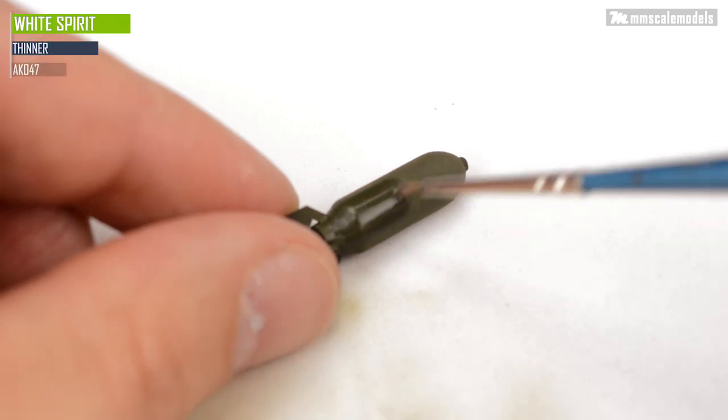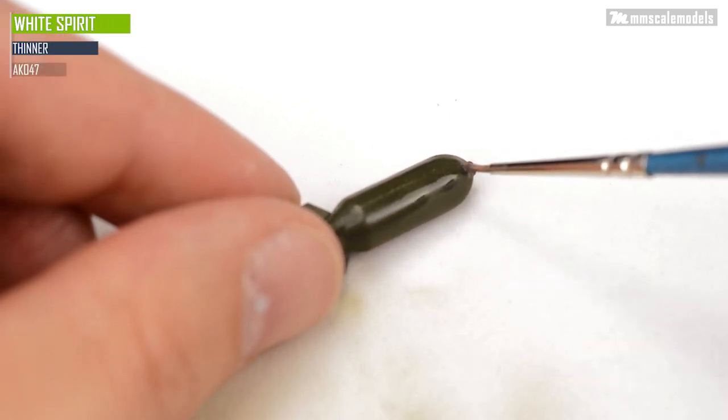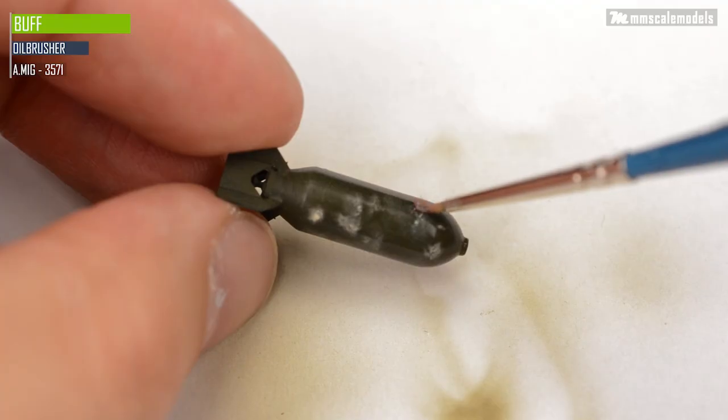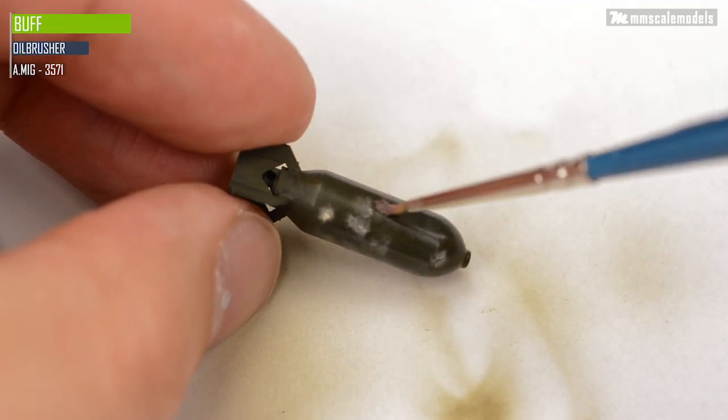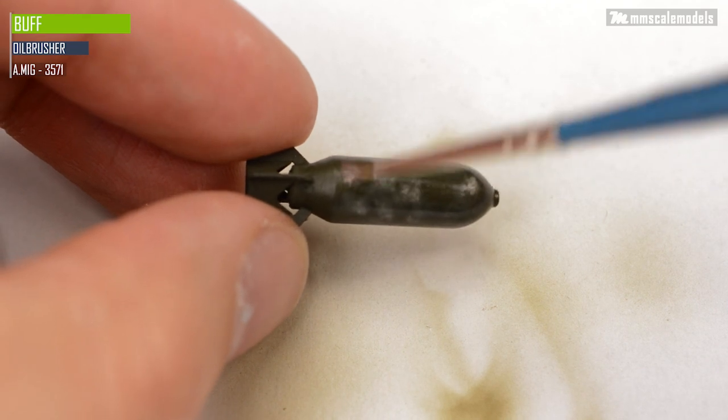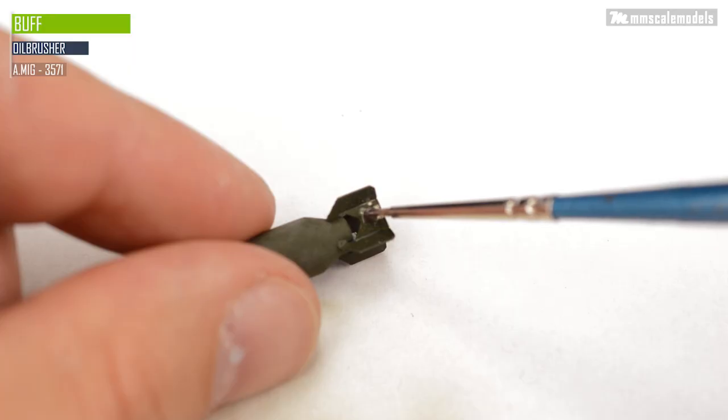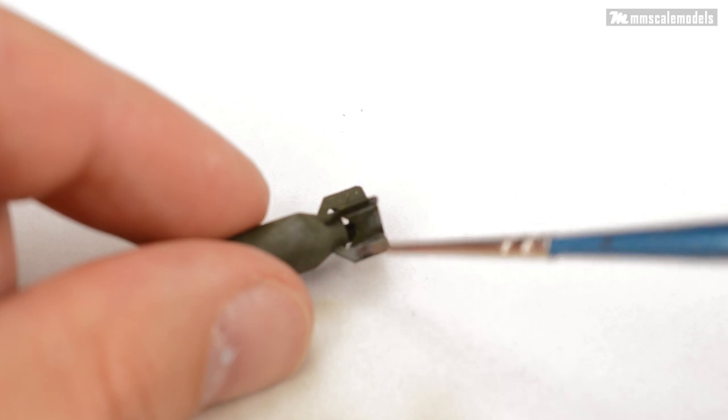To start the weathering first I covered the details with white spirit. Then I applied a few dots of buff oil paint all over the surface. Then I blended the oil paint but not to the point where it becomes a filter. I wanted to have some spots with different opacity randomly distributed on the entire surface.